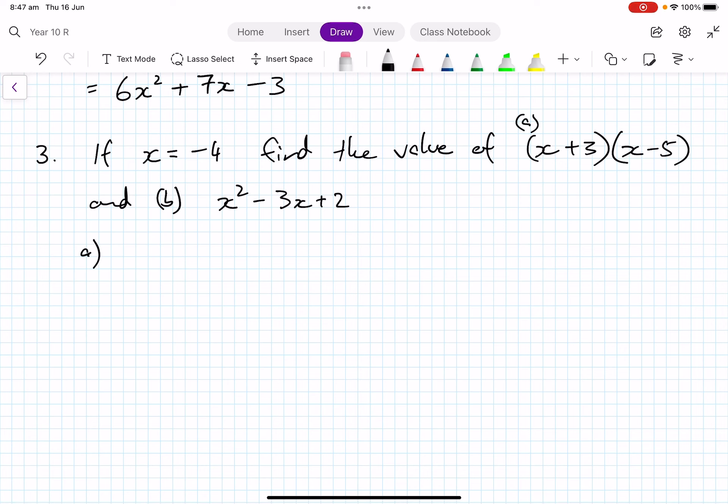What we're going to do is, wherever we see x, we're going to substitute minus 4. And we get minus 4 plus 3, minus 4 plus 5. Now what we can do is, we're going to do it separately. Minus 4 plus 3 is minus 1, times minus 4 minus 5 is minus 9. Multiply minus 1 and minus 9, that gives us positive 9.